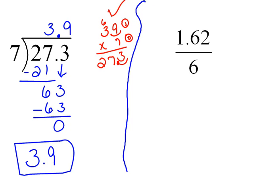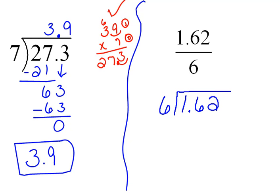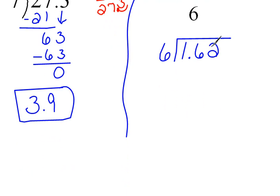Now, what about if we had something that looked like this? 1.62 over 6. Well remember, a fraction is really nothing more than a compact division problem. We could rewrite this using division. We could rewrite it as 1.62 divided by 6. And now we can actually see that as a division problem and begin working with it. Our divisor is a whole number, and that's what we have to have.